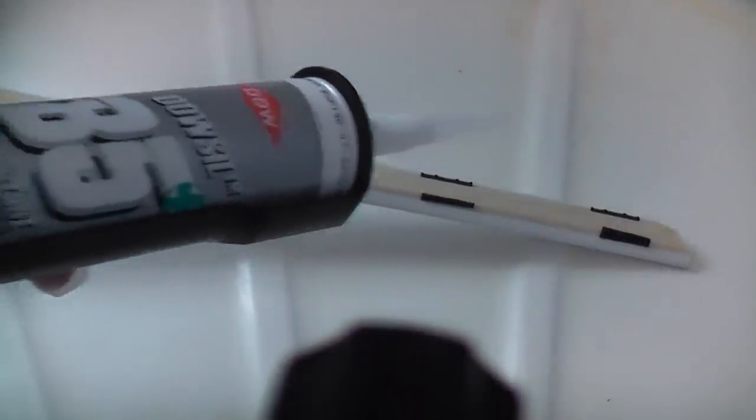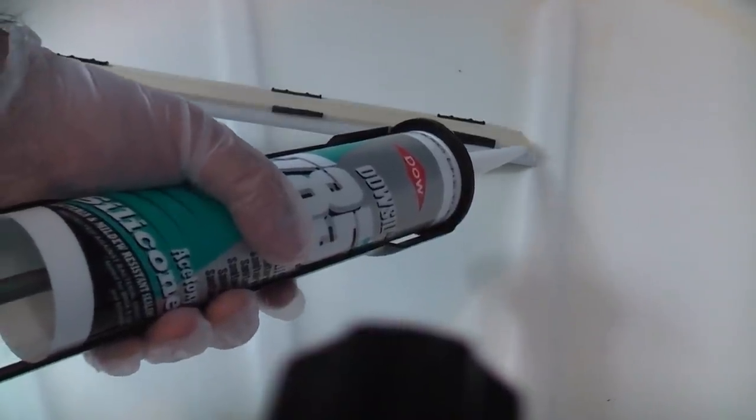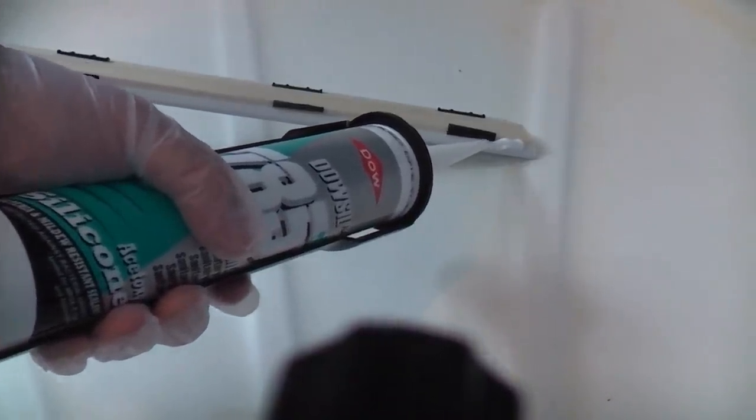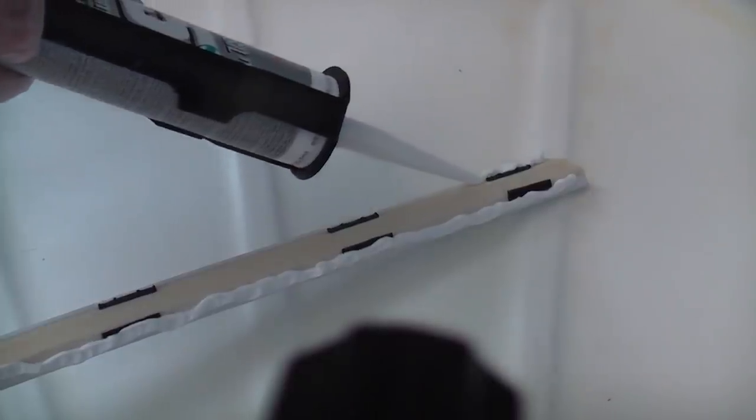So I'm going to start by running a bead on both of the white edges and it doesn't matter if we miss any because we can get it later. And I have to say that I'm in a really bad position here for applying silicone.